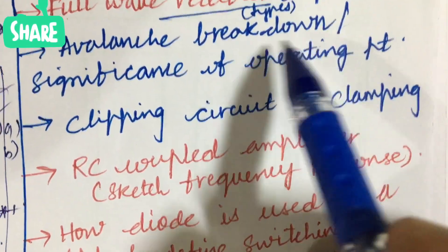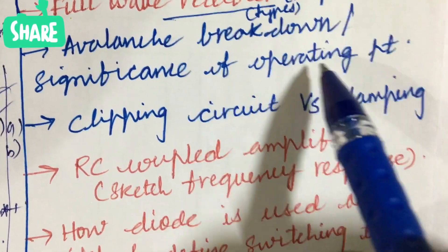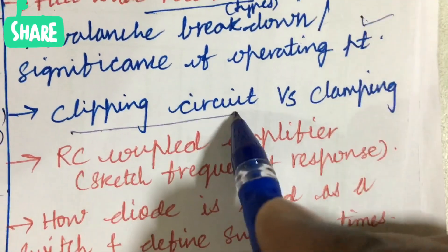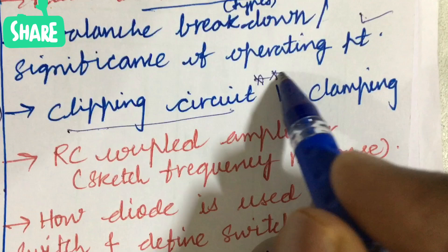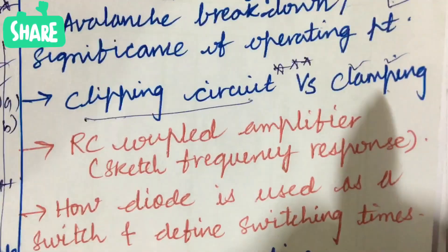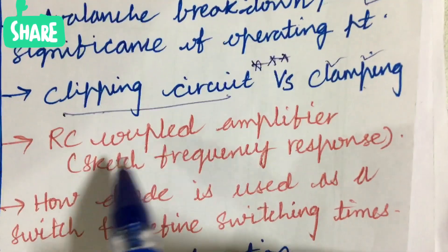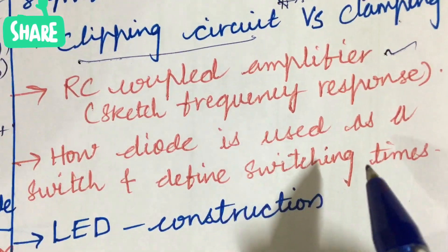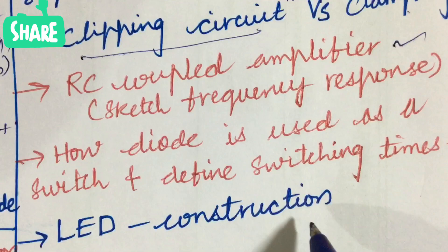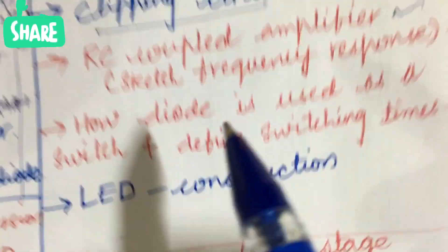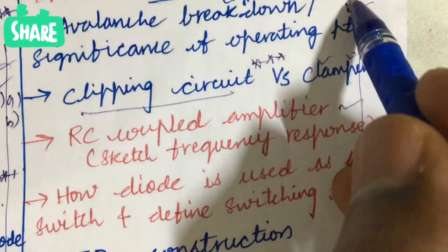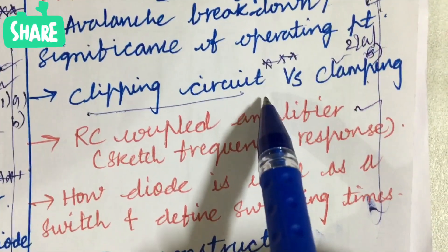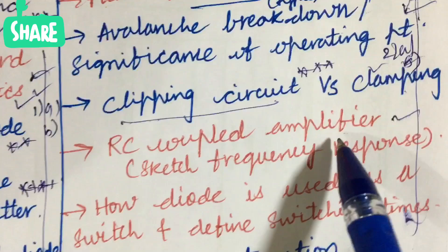Later, avalanche breakdown and the significance of operation point, as well as clipping circuit versus clamping circuit and explain the clipping circuit with the expression is also one of the gunshot questions. The differences in RC coupled amplifier, sketch frequency response, and how diode is used as a switch and define switching times, as well as the LED construction. Sometimes they may be asking the different types of rectifiers also. From this part we can expect 2A as well as 2B.